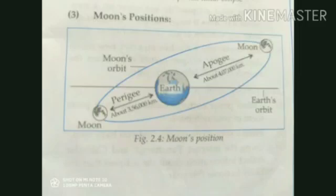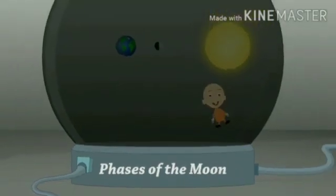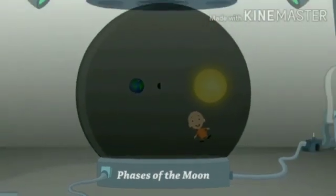You might have heard from your friends or from your grandmother that we can only see one face of the moon. The reason is that the rotation time and revolution time of the moon are the same. Because of this reason, we can only see one side of the moon.